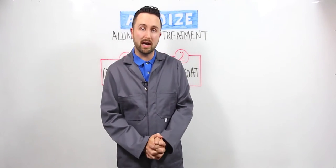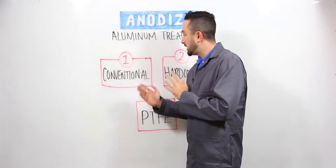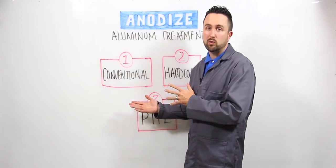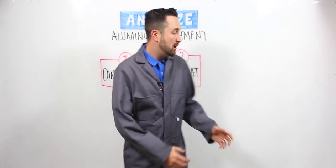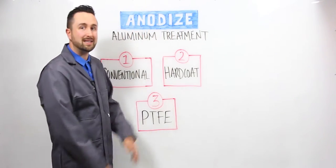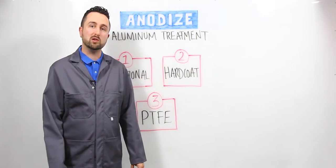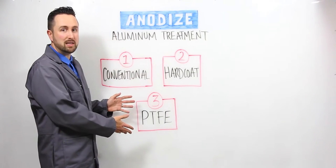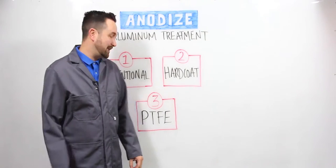We primarily perform three types of anodizing: conventional anodizing or MIL-8625 Type 2, hard coat anodizing to MIL-8625 Type 3 and AMS-2469, as well as PTFE modified hard anodizing to MIL-63576.